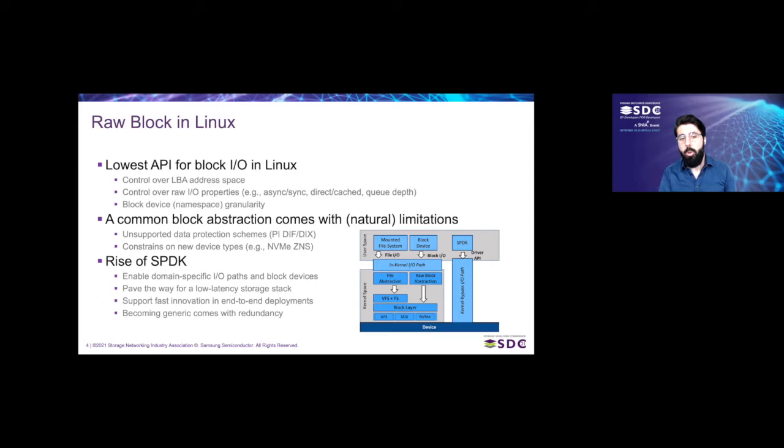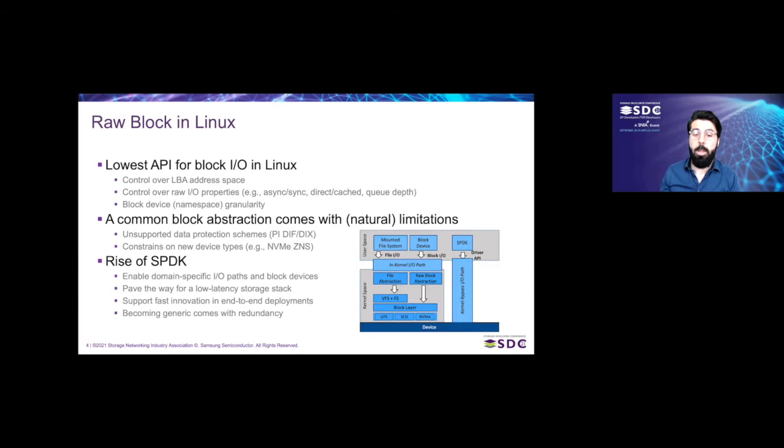There are also constraints for new device types. To give an example with ZNS, the block layer puts constraints that make sense for the kernel, such as requiring a power-of-two zone sizes or enforcing the use of the append command. If you don't want to use these features, the block device would not come up.